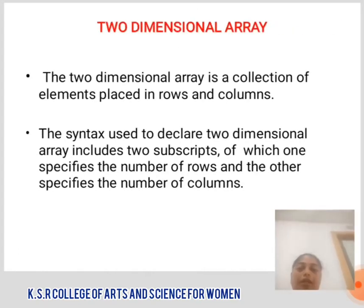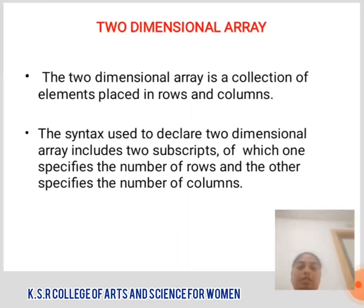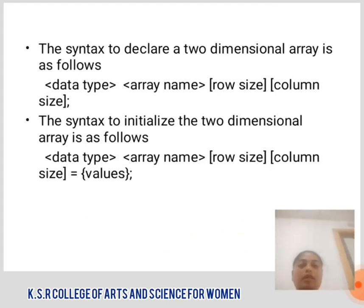2-Dimensional Array: The 2-Dimensional Array is a collection of elements placed in rows and columns. The syntax used to declare a 2-Dimensional Array includes two subscripts, of which one specifies the number of rows and another specifies the number of columns. The syntax to declare a 2D Array is: data_type array_name[row_size][column_size]. The syntax to initialize a 2D Array is: data_type array_name[row_size][column_size] = {values}.